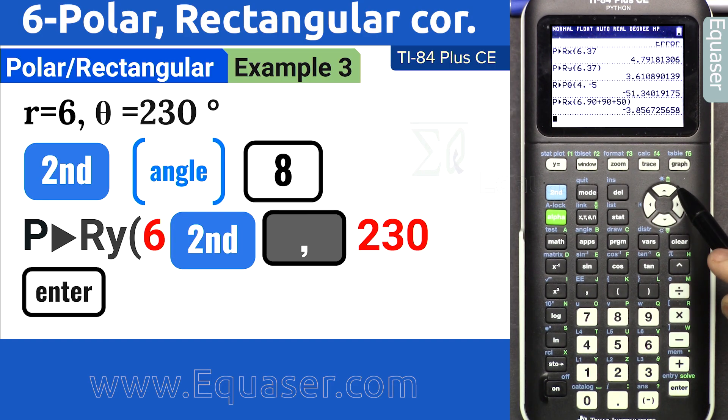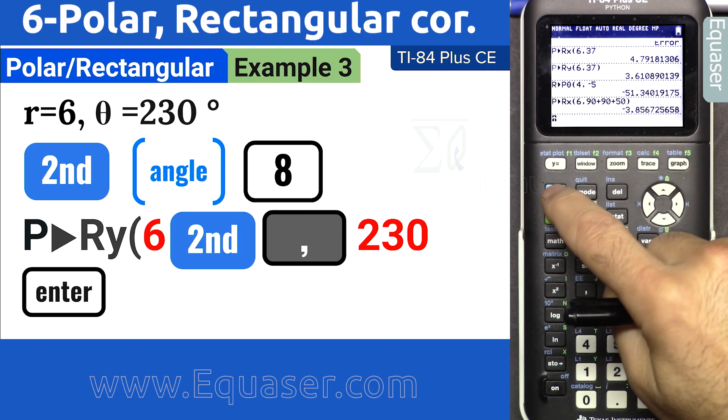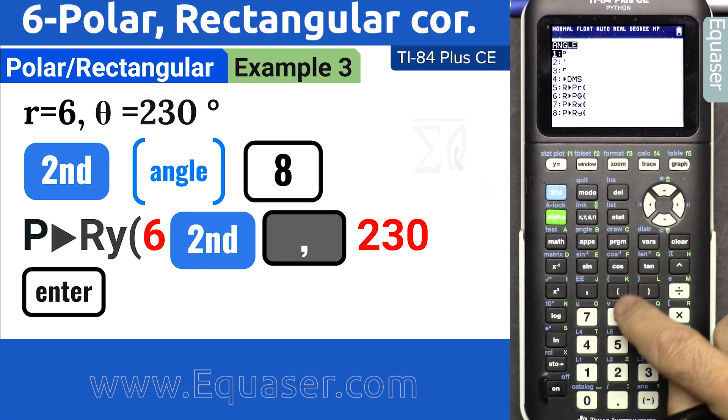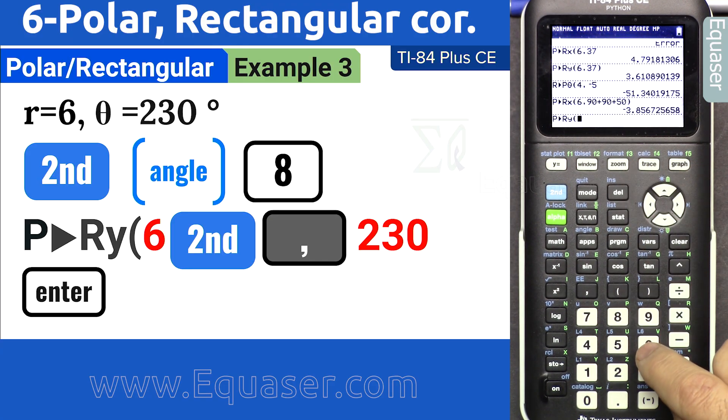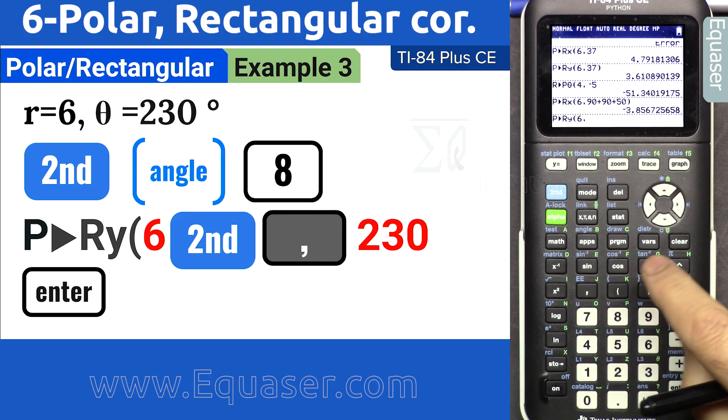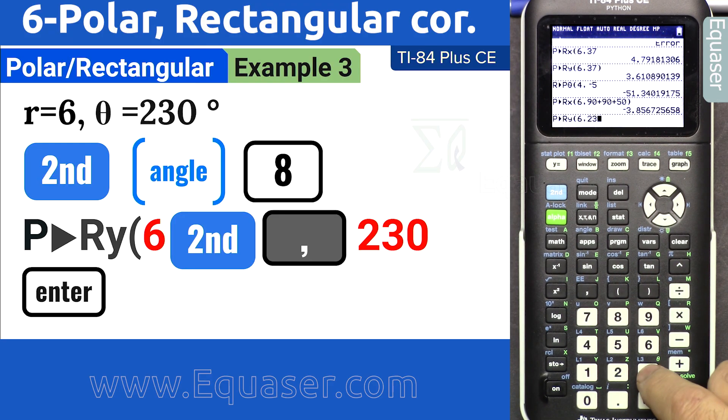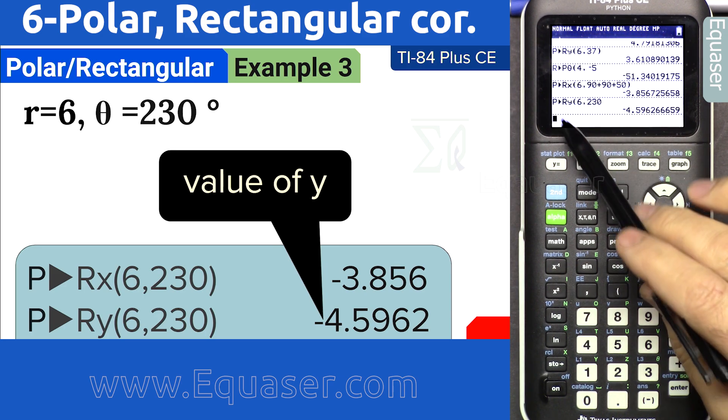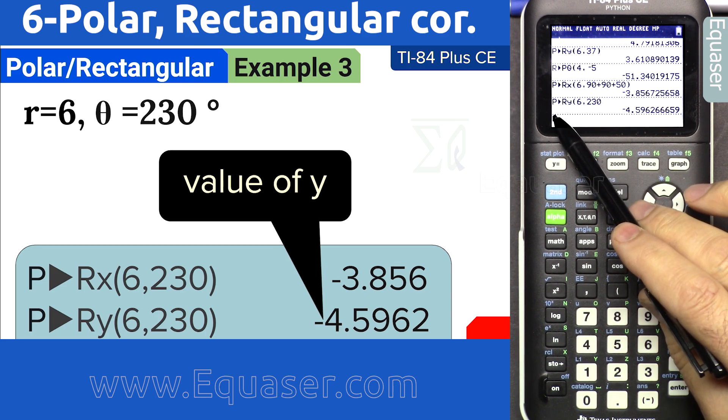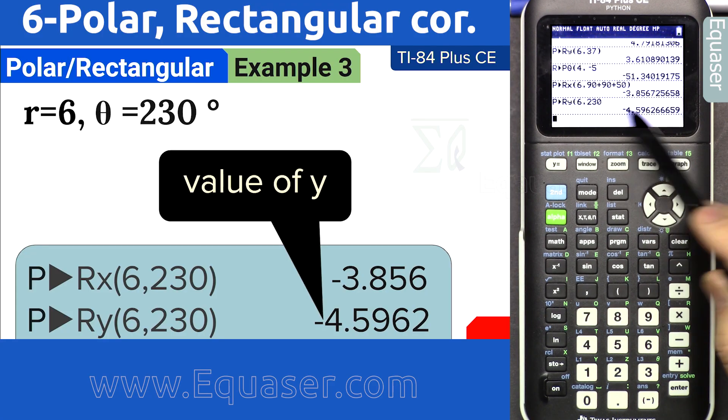Now let's get y. Second function angle. Now I'm pressing 8. 6 comma, now let's enter 230, and we got the y value here, because it says polar to rectangular get y.